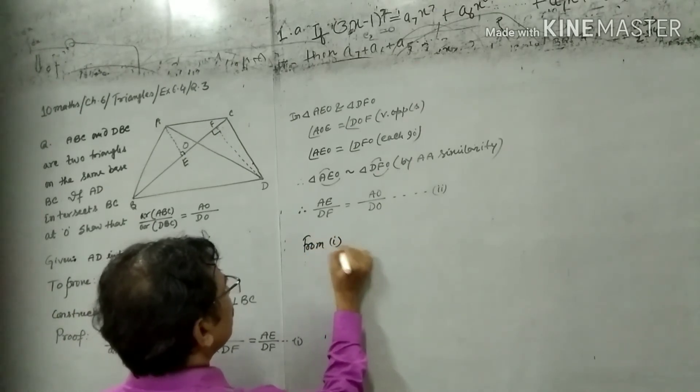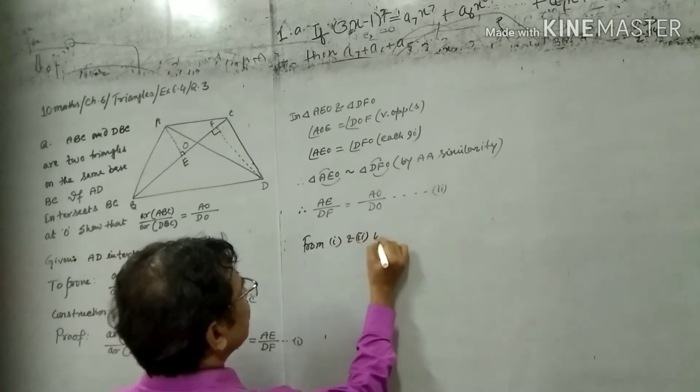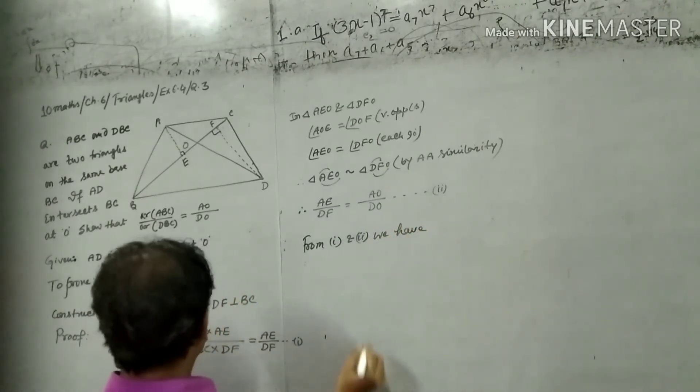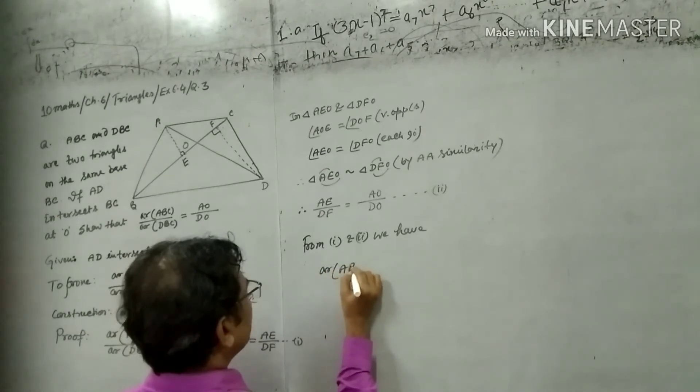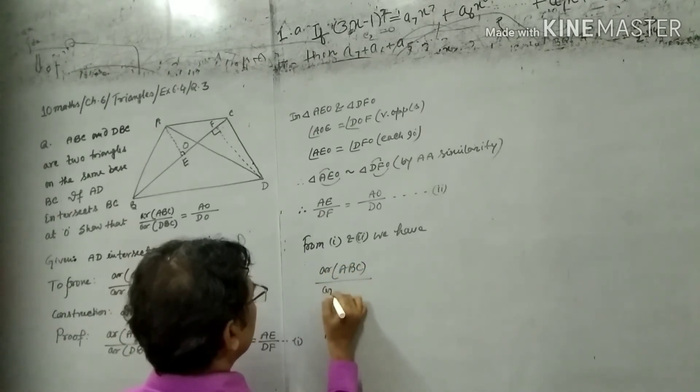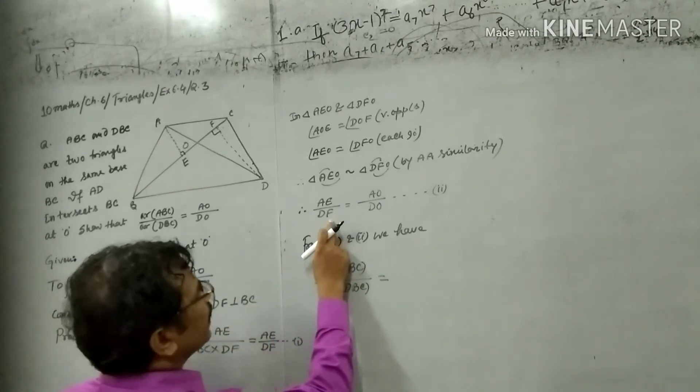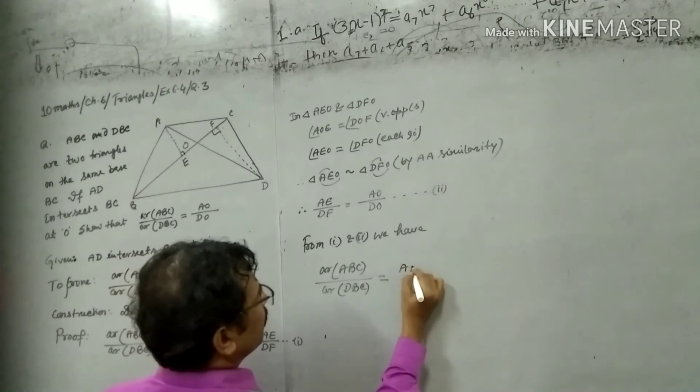From first and second, we have area ABC over area DBC equals to AO upon DO.